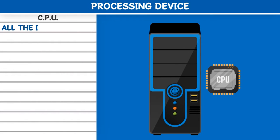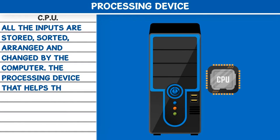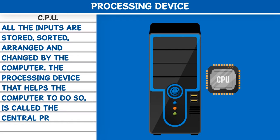Processing Device - CPU: All the inputs are stored, sorted, arranged and changed by the computer. The processing device that helps the computer to do so is called the Central Processing Unit, CPU.